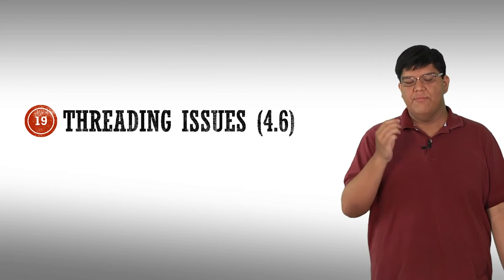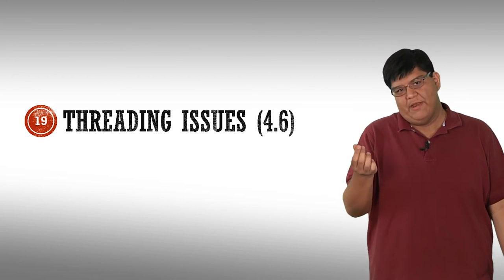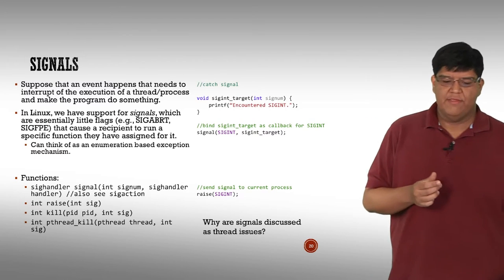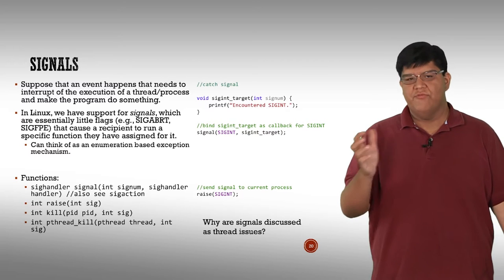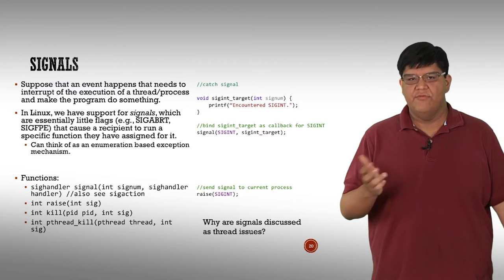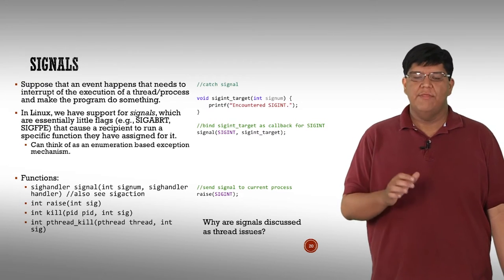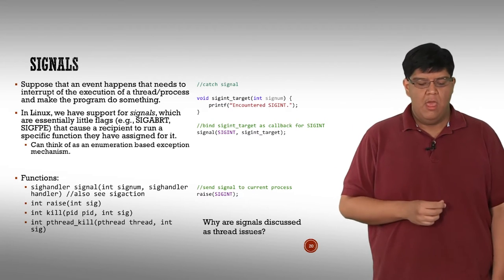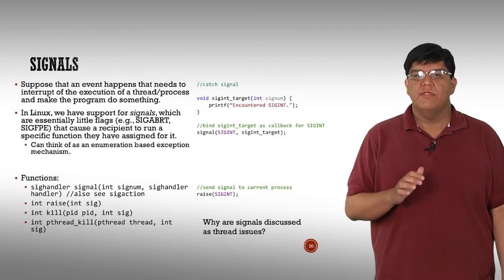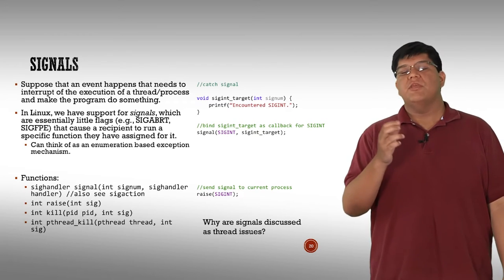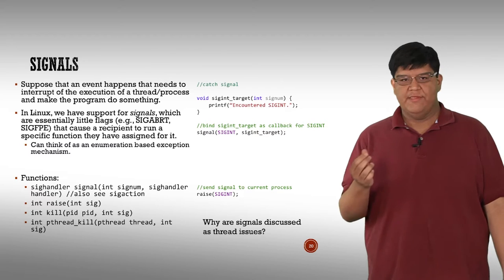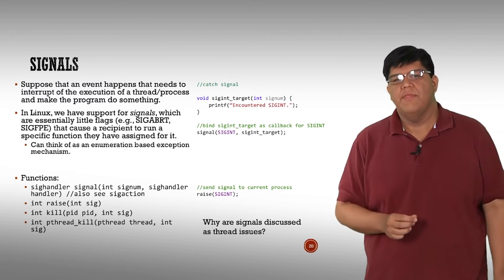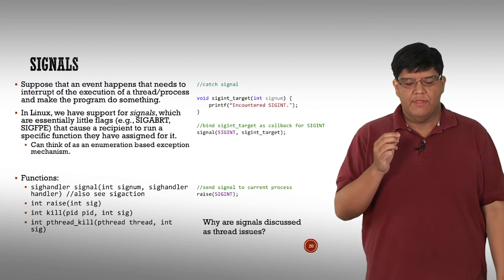The first thing we want to talk about is signals. Right now we have entire programs, entire processes, entire threads running, and they can communicate between one another or wait for another to complete. What we have here is basically another mechanism whereby a message can be transferred between threads or between processes — and this is going to be called a signal. This is very much a Linux thing.